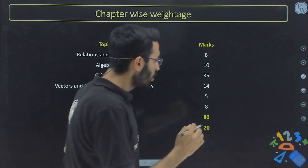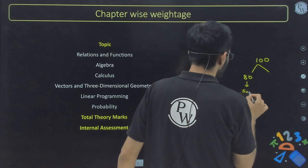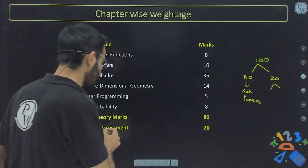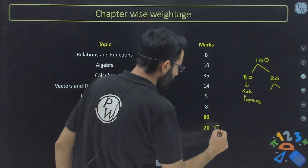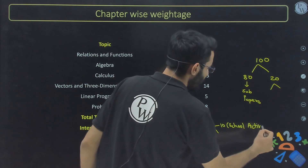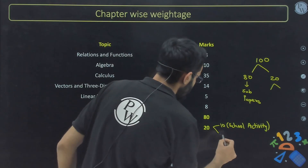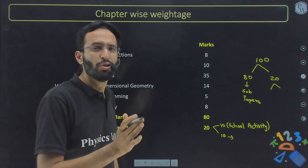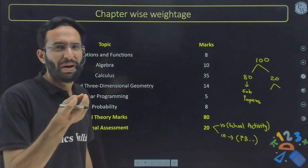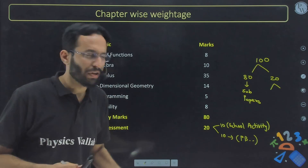This chapter-wise analysis is a rough analysis. Out of 100 marks in Mathematics, 80 marks come from the subjective paper. The remaining 20 marks depend on your school performance — 10 marks from school activity-based projects and 10 marks from school behavior or pre-board scores. Few schools take two pre-boards, few take three.